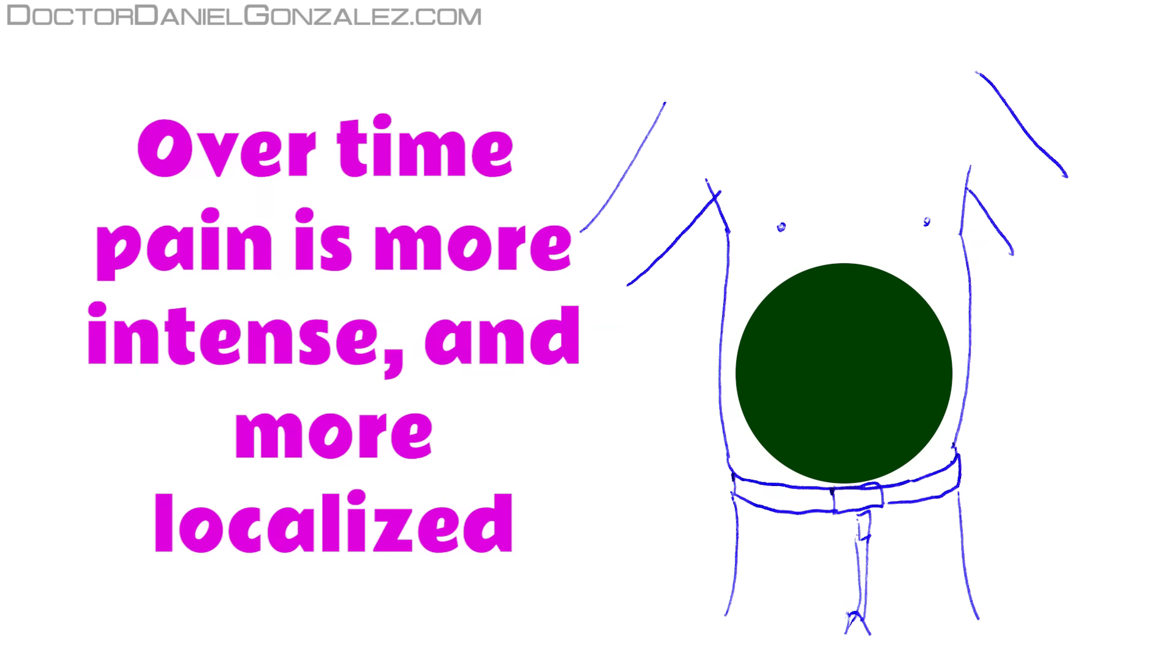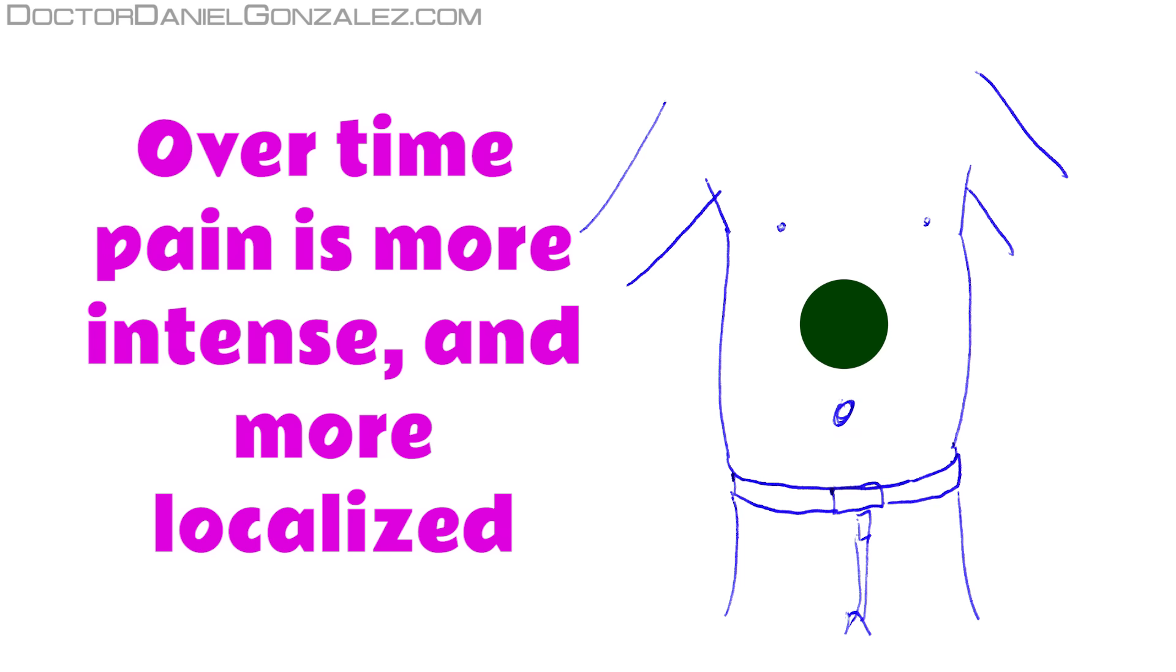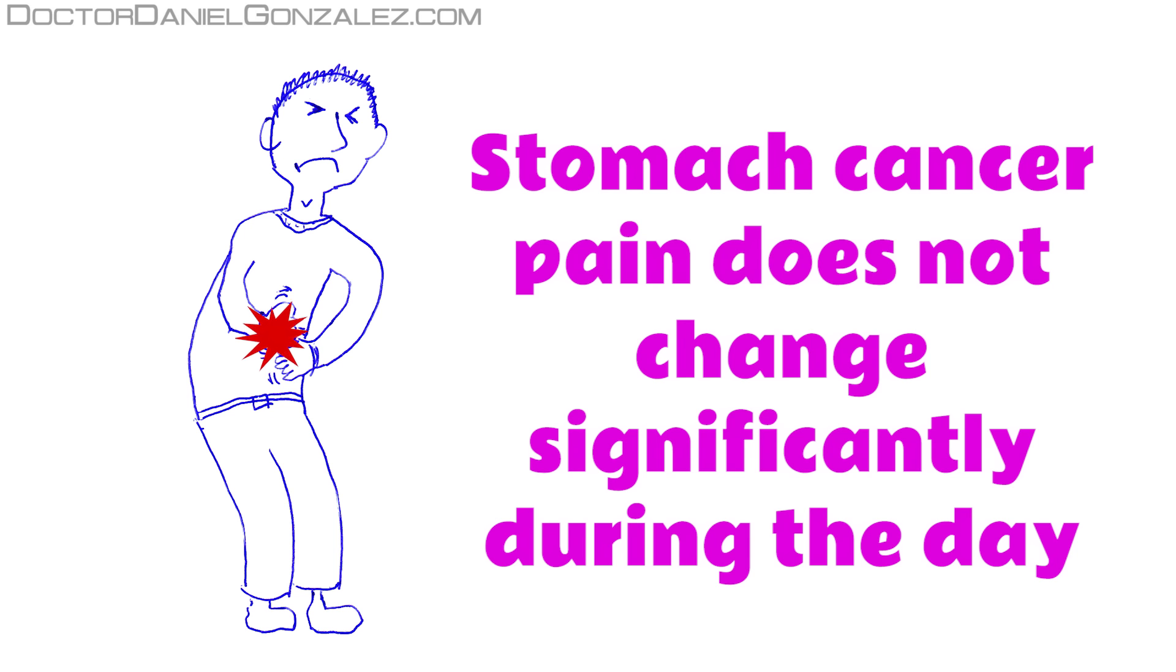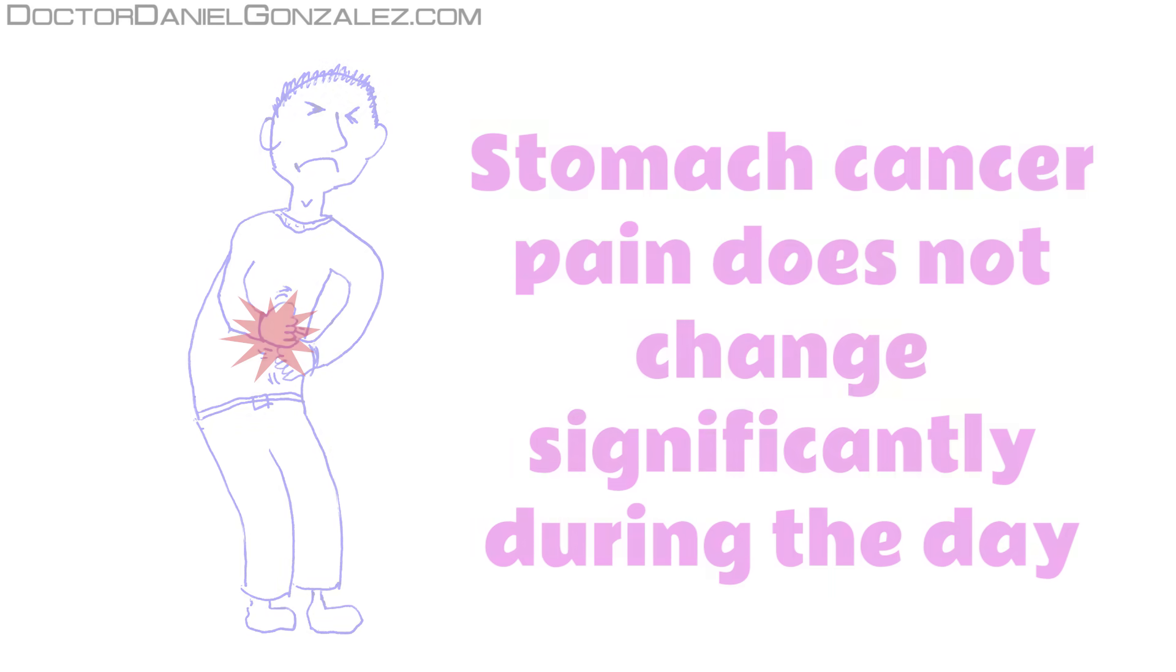Over time it's accentuated and tends to be located in the central part of the belly, just below the ribs. Unlike the pain of gastric or duodenal ulcer, the pain due to stomach cancer doesn't usually change significantly, neither with food ingestion nor with taking antacids.